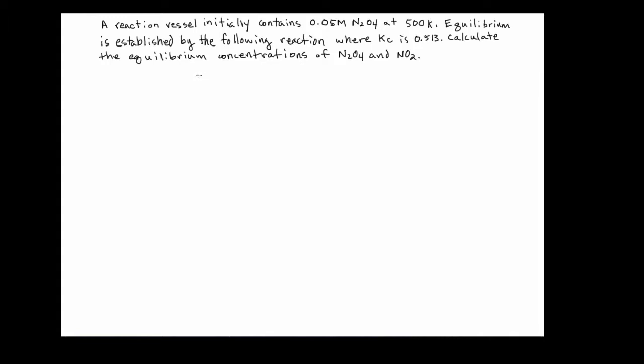The thing to do first is to write your equation. And I guess this was supposed to be given here, but this is what it is. So it's N2O4 going to two NO2s, and I'll put the Kc here off to the side. Even though it's in the problem, I'm going to rewrite it so that it's right in front of me, and I can easily find it since we're going to need it.